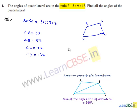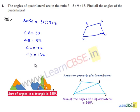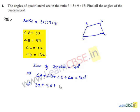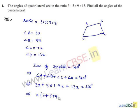We know that the sum of angles in a quadrilateral is equal to 360 degrees. So we get: angle A + angle B + angle C + angle D = 360 degrees, which implies 3x + 5x + 9x + 13x = 360 degrees. Taking x common, we get x(3 + 5 + 9 + 13) = 360 degrees.